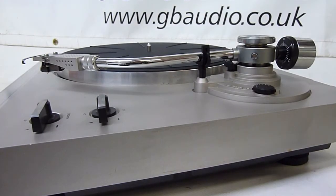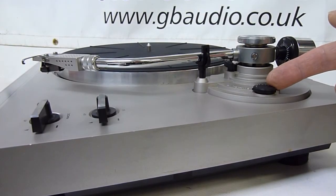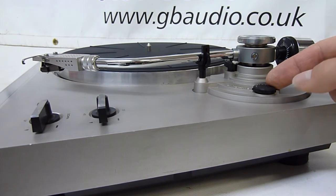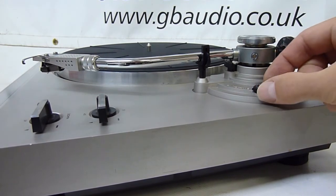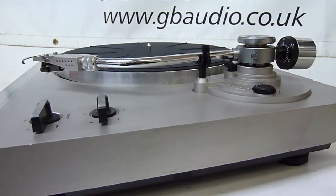The first thing we need to do is find this little adjuster called anti-skating. We turn that round to the zero position. That takes the bias off the arm.